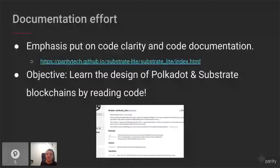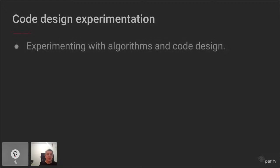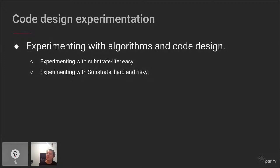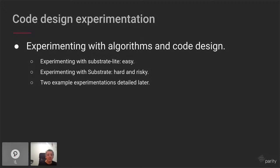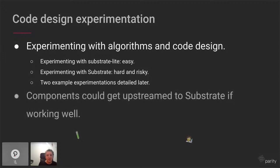The last objective is to experiment with new things. Experimenting with Substrate is hard and risky because we don't want to integrate features into Substrate production only to remove them later. Whereas with Substrate Light, we can do whatever we want — we can break it as much as we want. We have two example experimentations I'll detail shortly — two things in Substrate Light that are not in Substrate. If components work well, the point is to upstream them to Substrate.